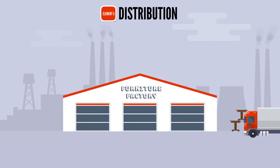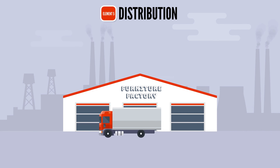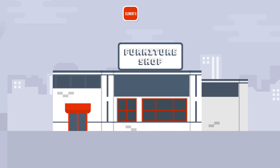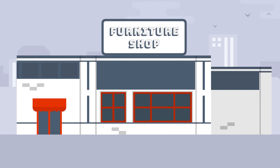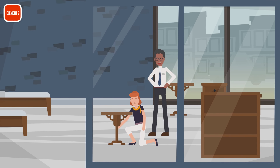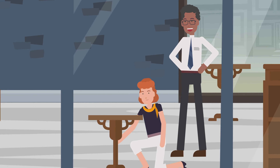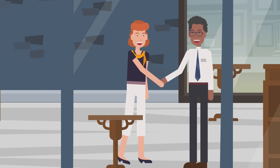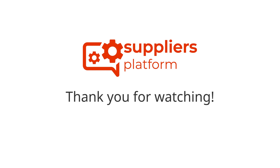Element five: distribution is to spread the product throughout the marketplace — example: logistics company. Element six: retail is to sell a product or service to an individual end customer — example: furniture shop. Element seven: customer is an entity that purchases goods or services from another company — example: individual client. That's all, thank you for watching. Get more at www.suppliersplatform.com.